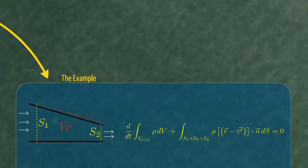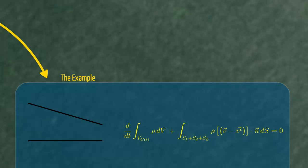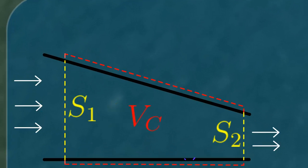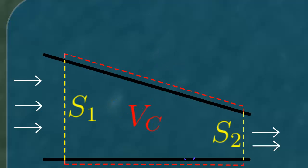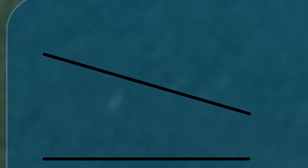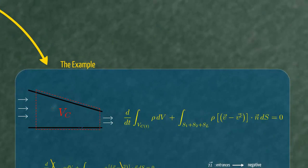Now we are going to apply the expression to a very simple problem. This is our control volume. As you can see, the control surface is surrounding a nozzle through which a current of liquid of certain density flows. The liquid enters the control volume through surface 1 and exits through surface 2.